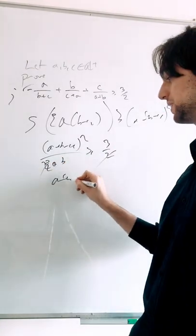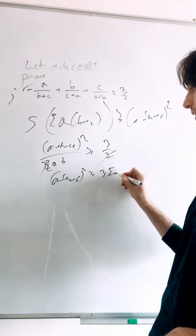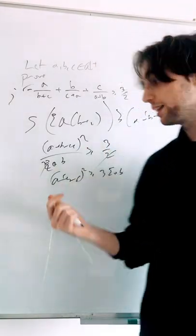In other words, we need to have A plus B plus C squared. It needs to be greater than or equal to 3 times the cyclic sum of AB. What does that transform into?